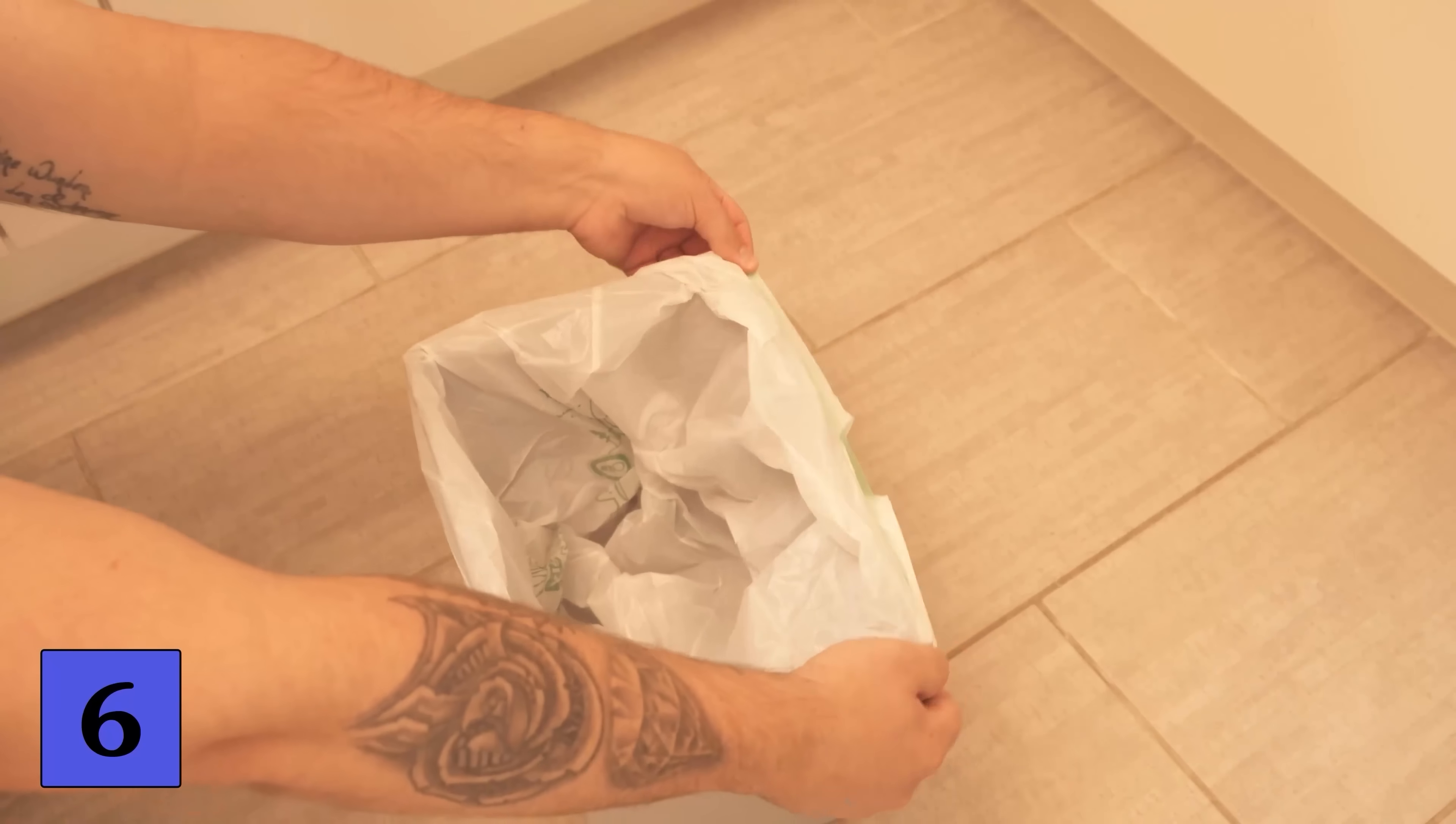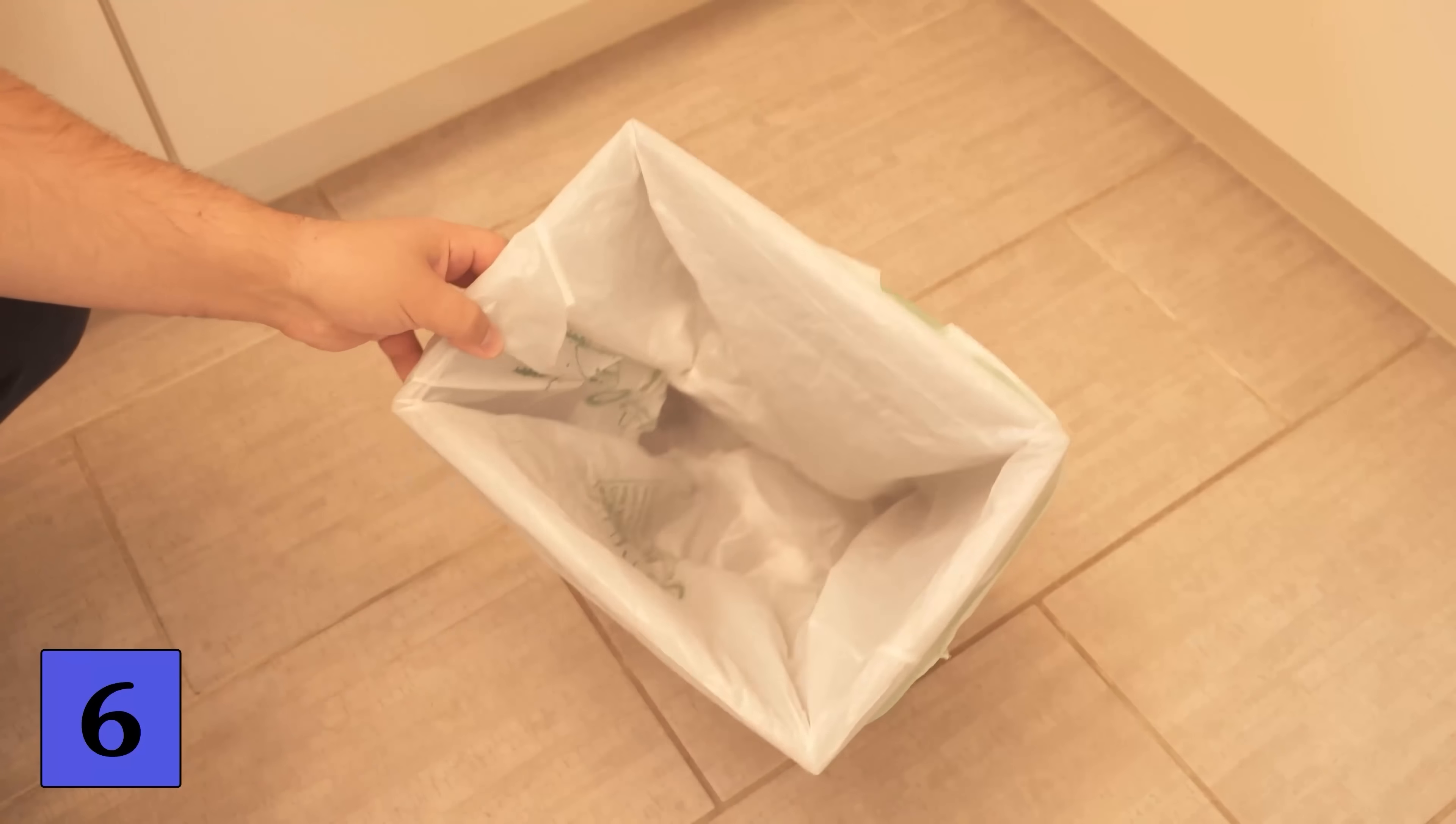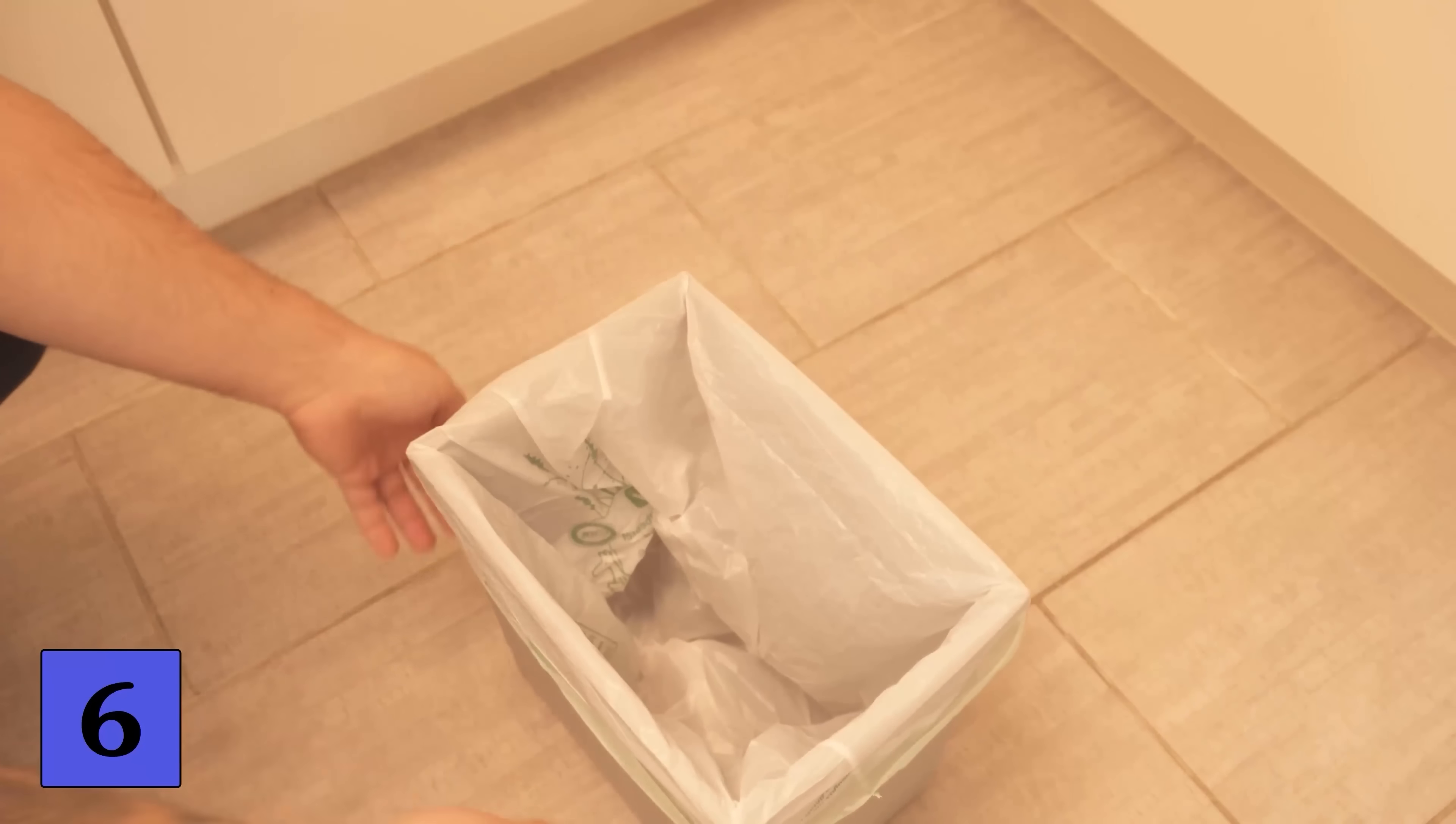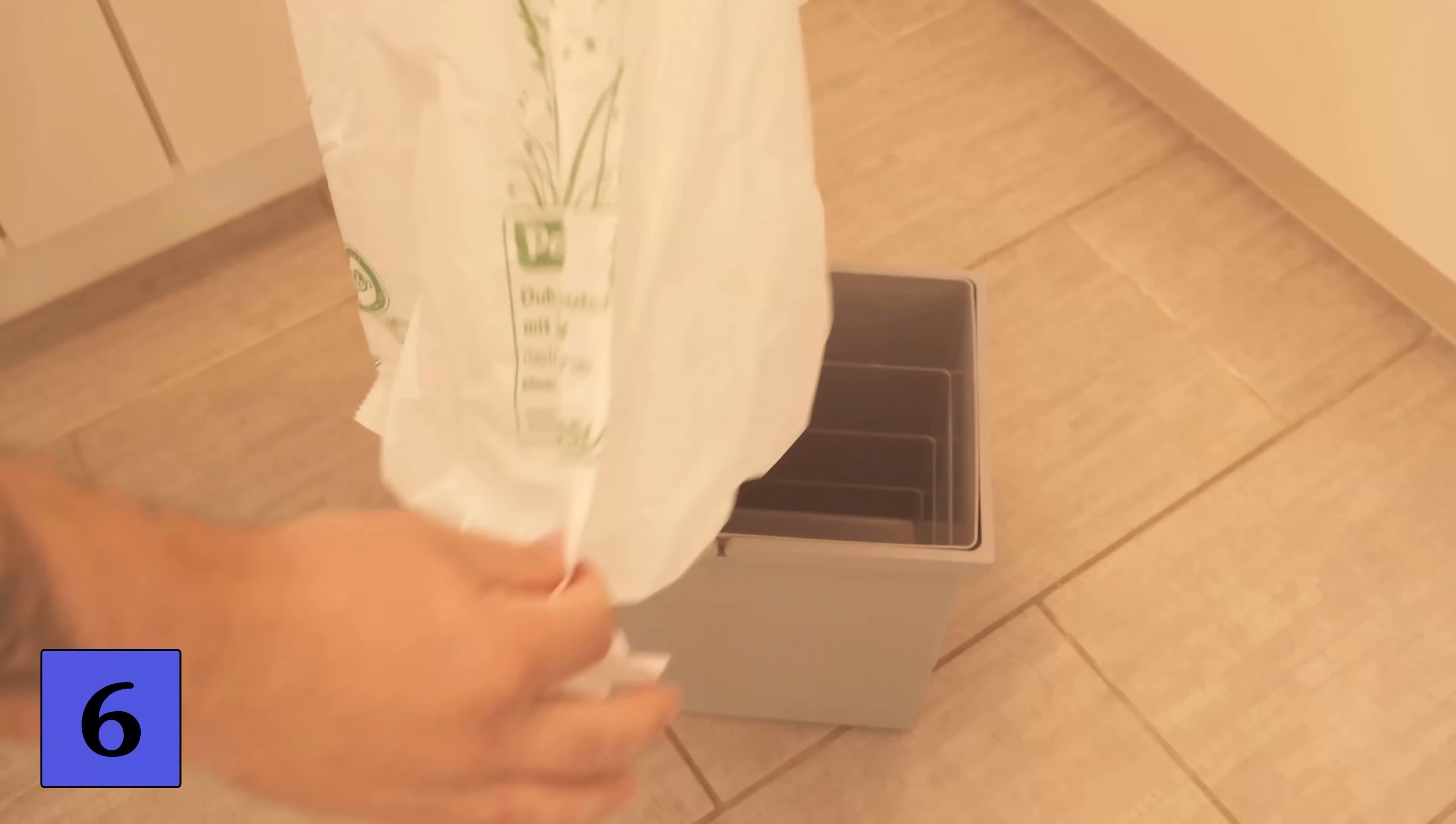Because if you take a closer look at the bin liner you will see that the edge is now the wrong way around. Because the bin liners are always placed the other way around on the roll. In fact the bin liner manufacturers have thought of something.